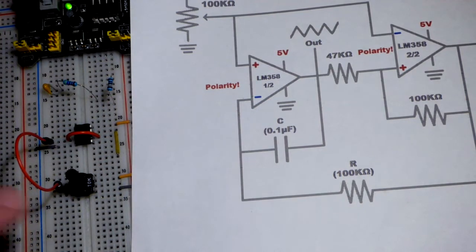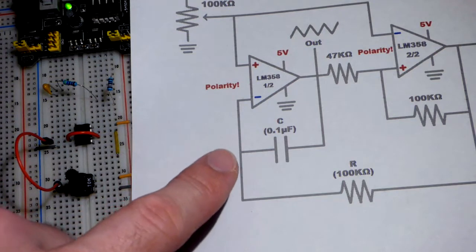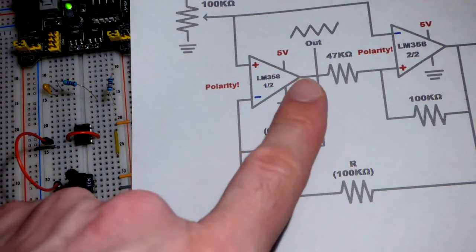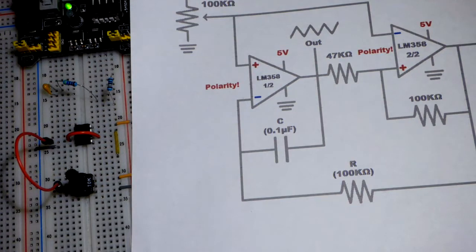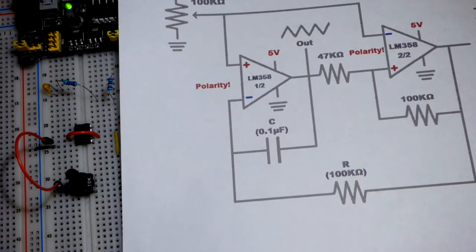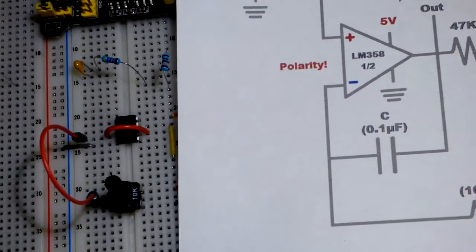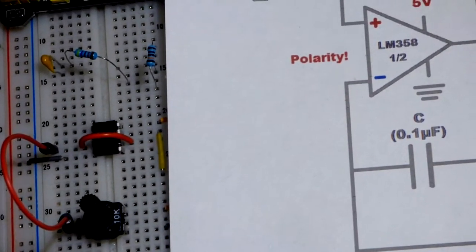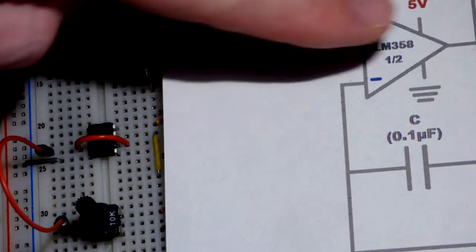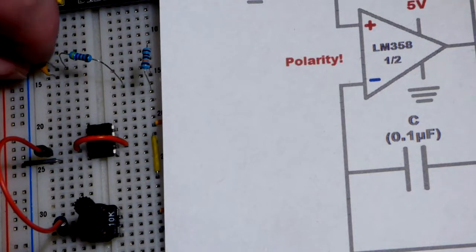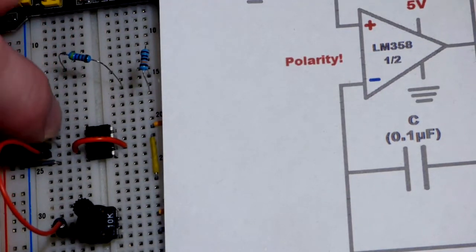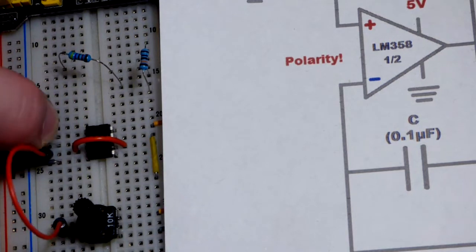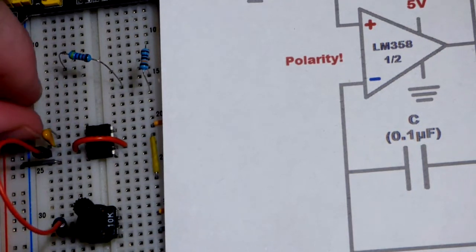Now we're going to put the capacitor in. The capacitor goes from the output to the inverting input. Again, the pin layout of the physical component is opposite of what we see there, but here we can still see output there, inverting. So output's top and inverting is the second pin down right there. So this is a 0.1 microfarad capacitor.